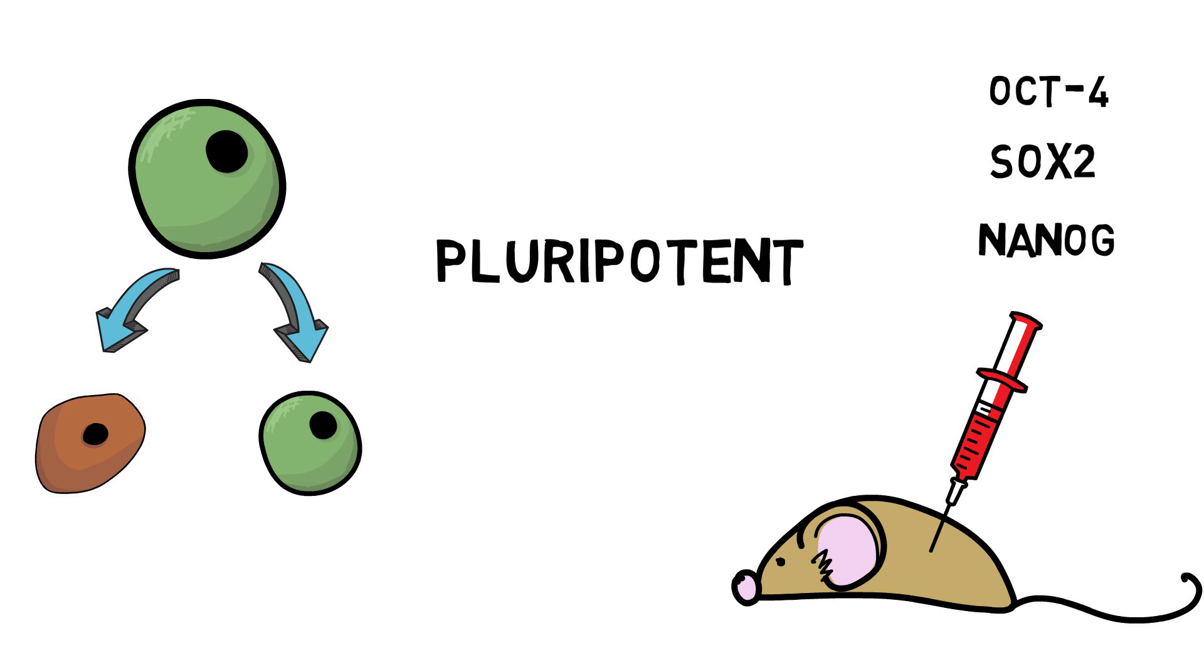So if you see these transcription factors, you can work out if the cell is pluripotent or not, because it needs these to help with the expression and self-renewal of this type of stem cell.